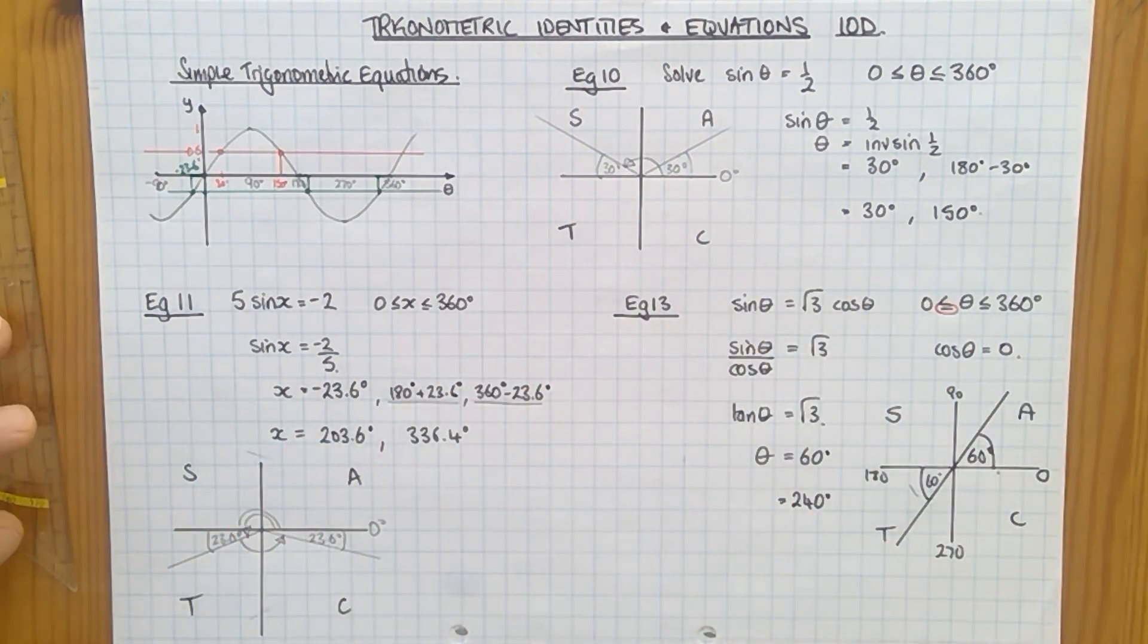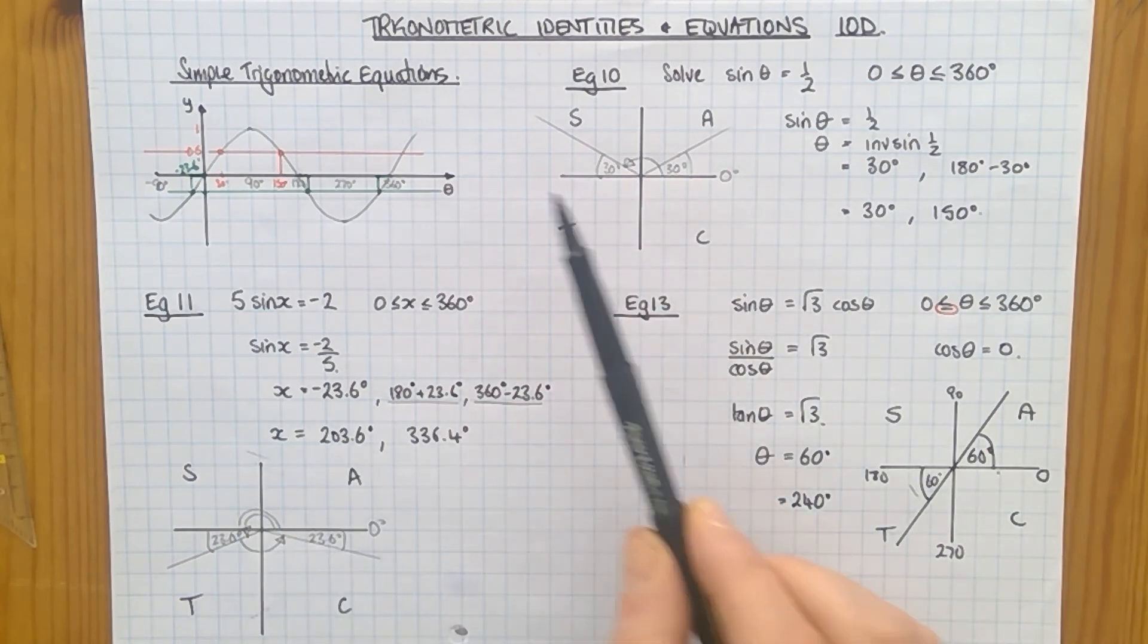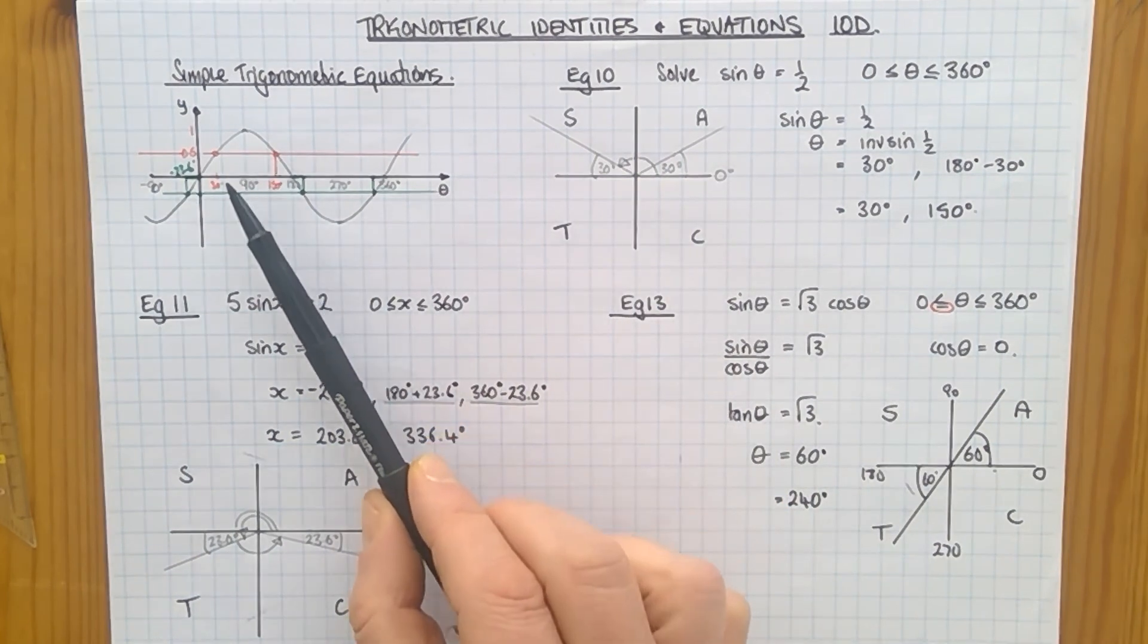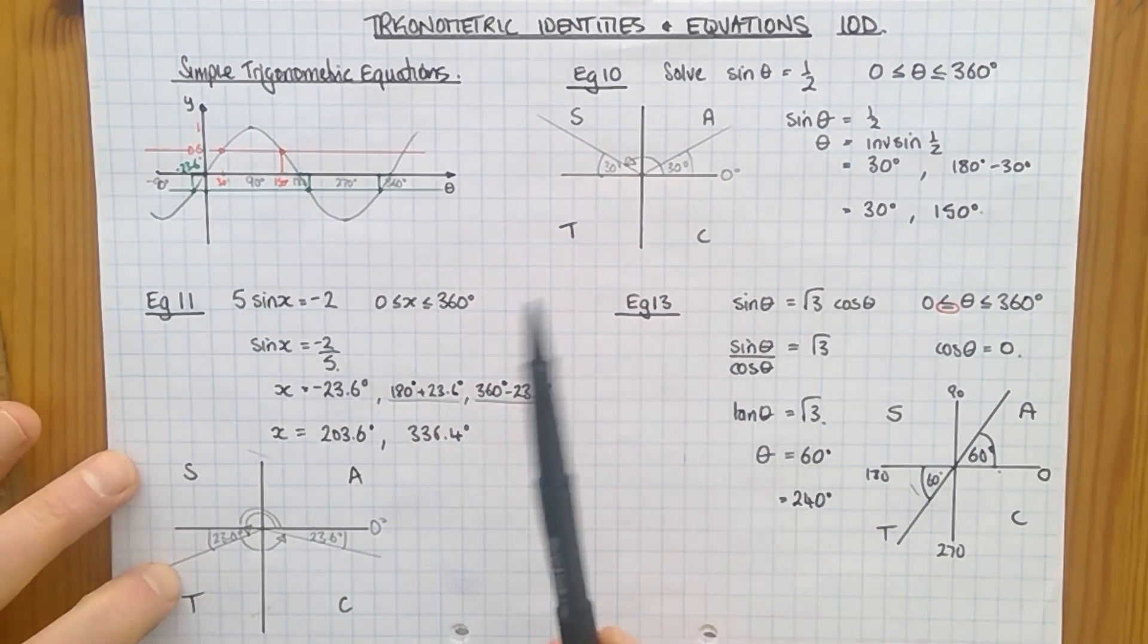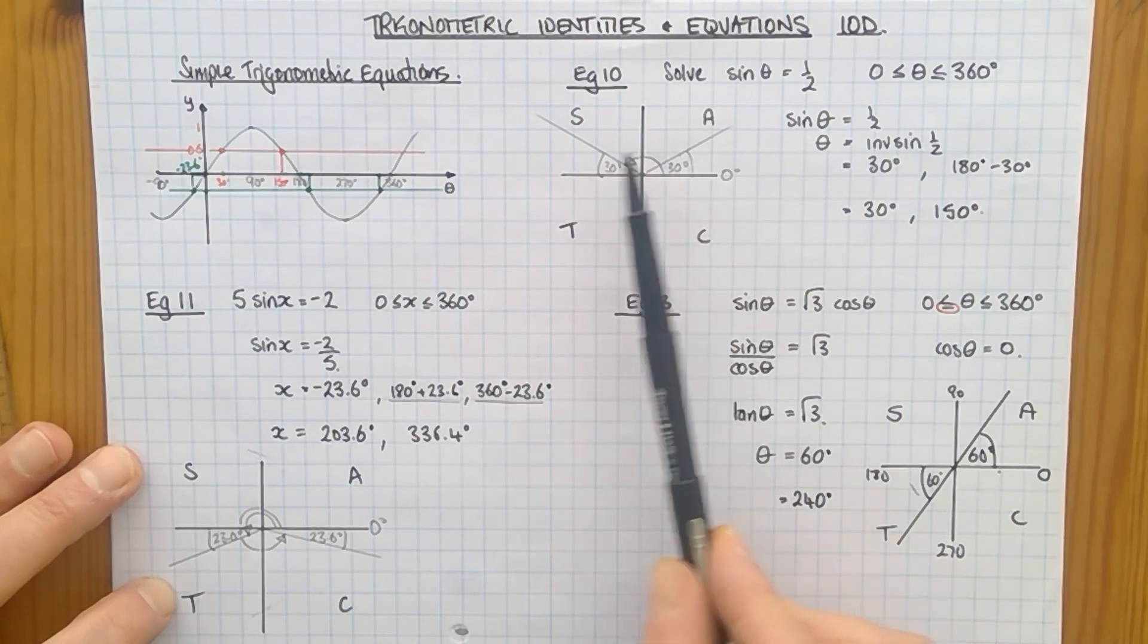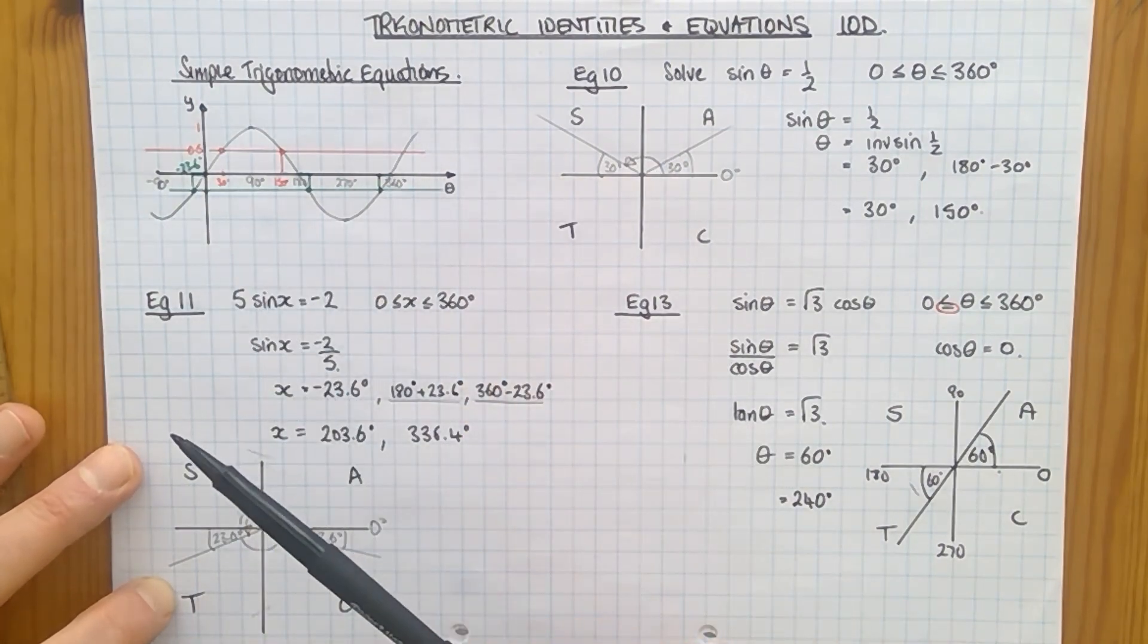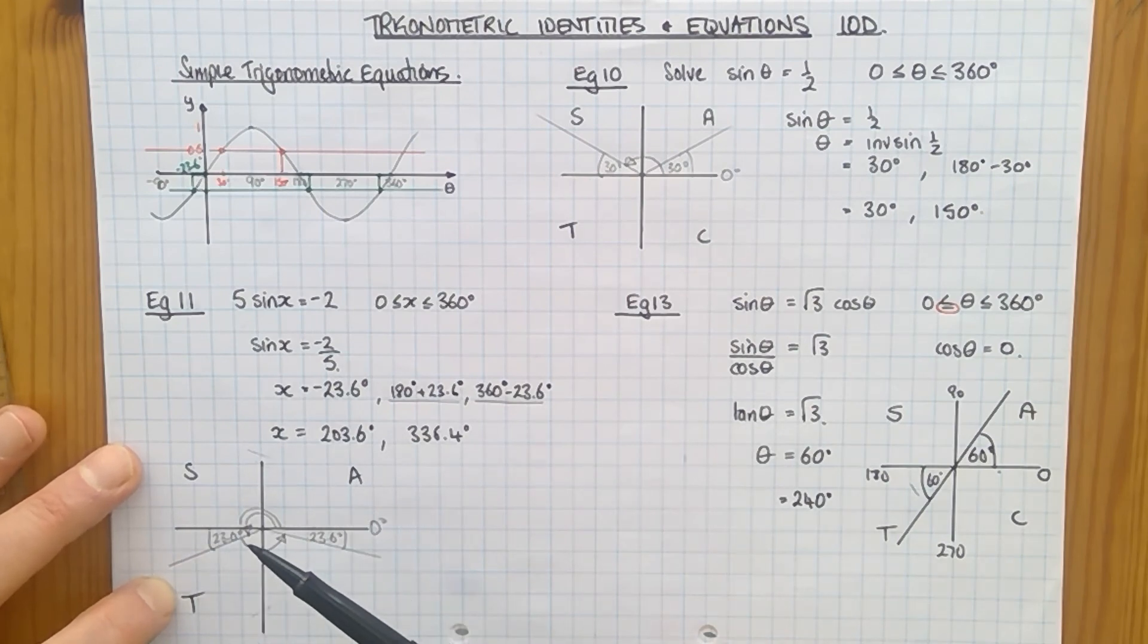So three examples showing you how to work them out. You can decide yourself if you use a CAST diagram or if you want to sketch a graph. It's worth getting used to both. If you decide to use the CAST diagram to solve these, please make sure that you can still sketch sine, cos, and tan very accurately and very quickly.